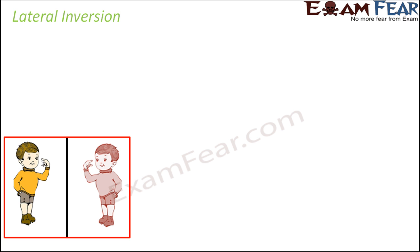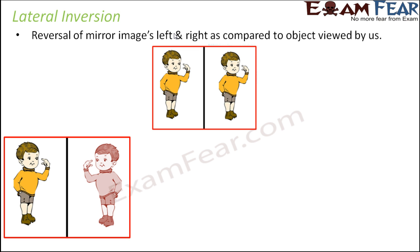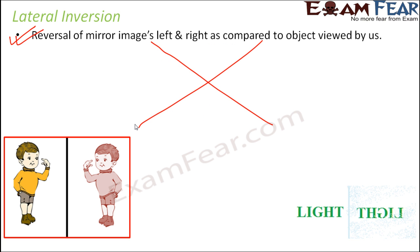Whenever you stand in front of a mirror, the boy appears to be pointing with his left hand, but in the mirror it appears as if he is doing it with his right hand. The reversal of left and right in a mirror image compared to the object is known as lateral inversion. Note that a full bodily flip of the image never actually happens.